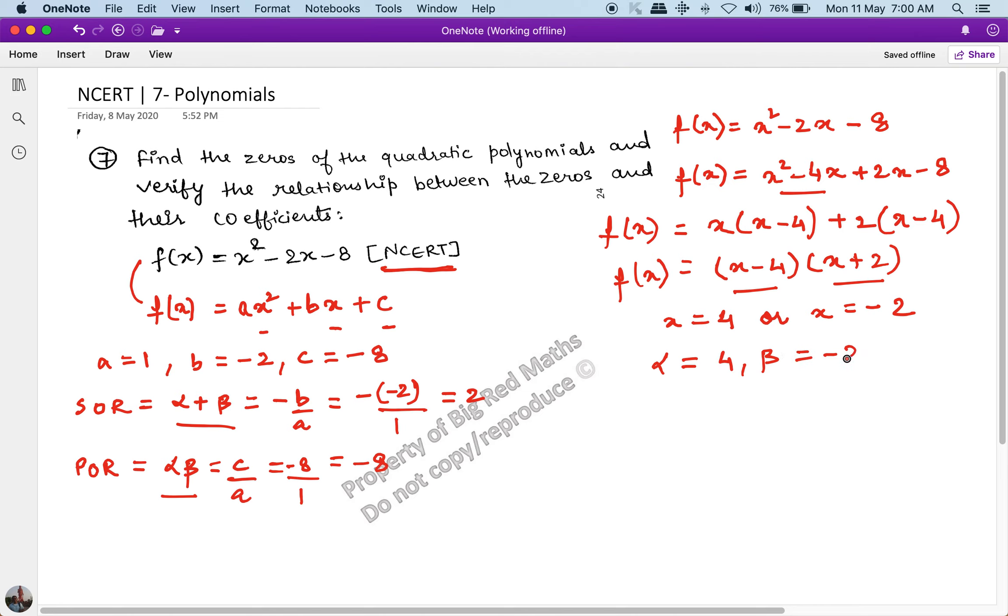Now the sum of the roots is α + β = 4 - 2 = 2. This is 2, and here also we receive the sum of the roots as 2, so this relation is verified.